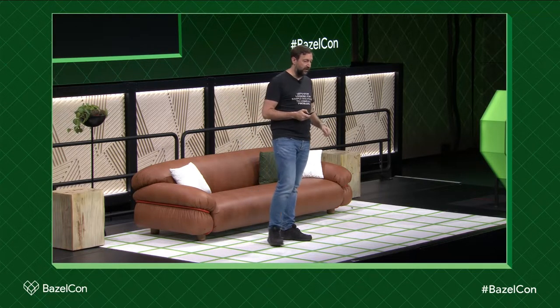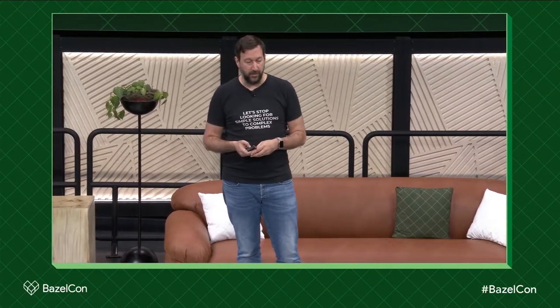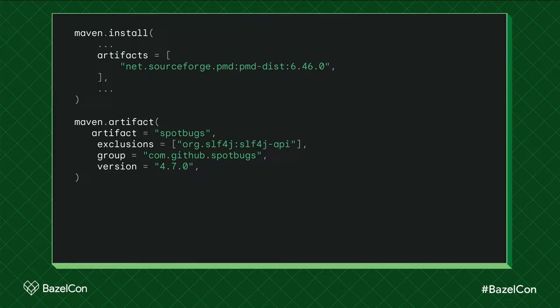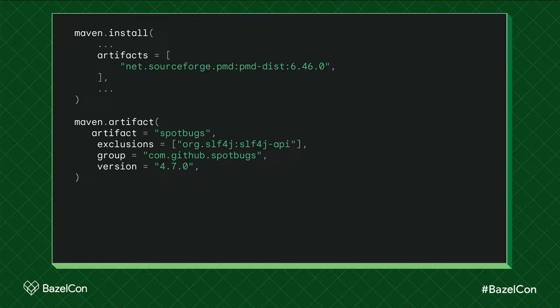I was talking with the team working on Bzlmod trying to figure this out, and the key insight they gave me was that tag classes can be thought of as macros. So something like net.sourceforge.pmd:pmd-dist expands into a blob with group, artifact, version, and an empty exclusions list. So why not have a tag class that is itself a macro for the thing we want to express? This is functionally equivalent, but works with Bazel 6. The key thing is that they should have the same name, so they get aggregated into the same set of dependencies. You've got to use macros to make your life easy, and then think of tag classes as just being the parameters for those macros.